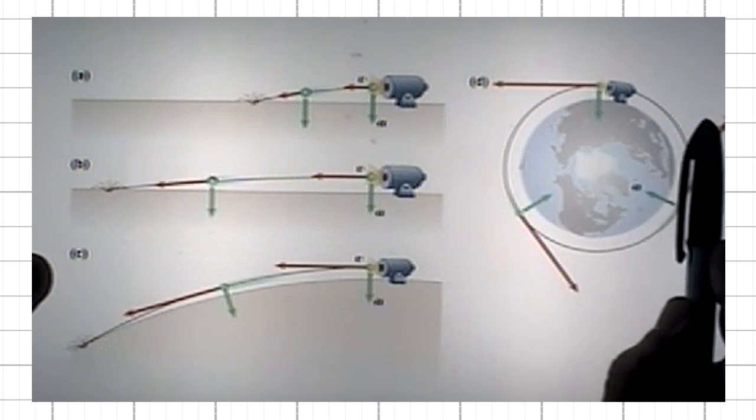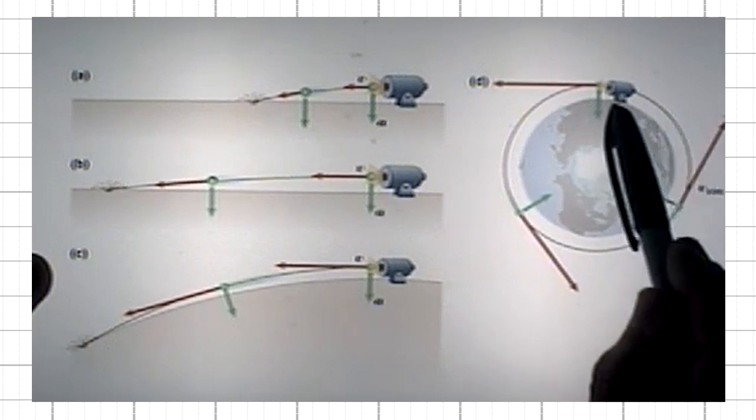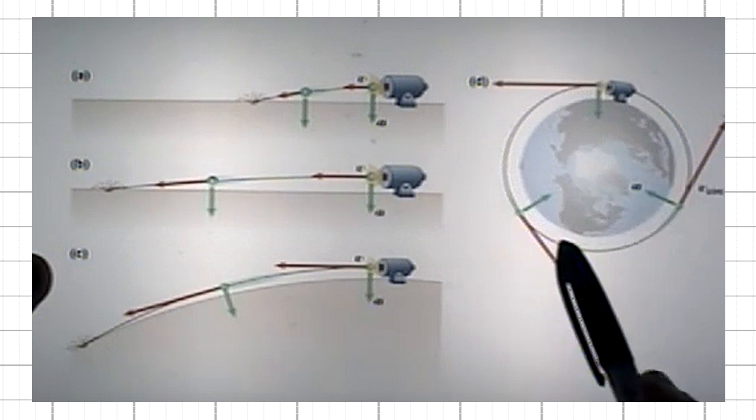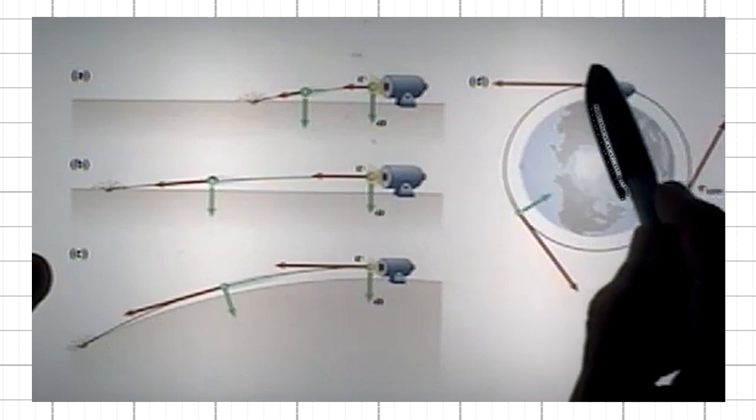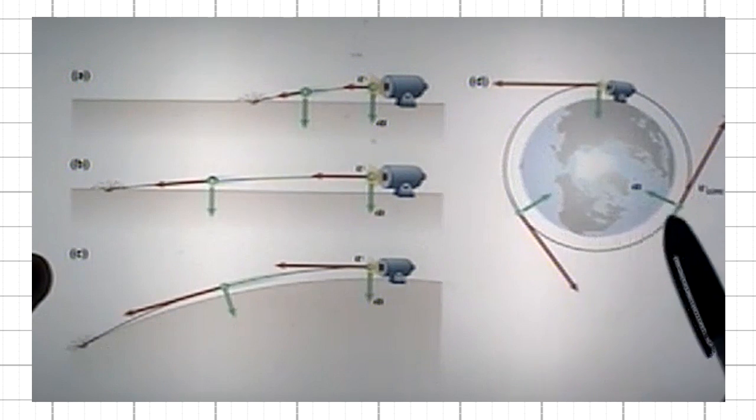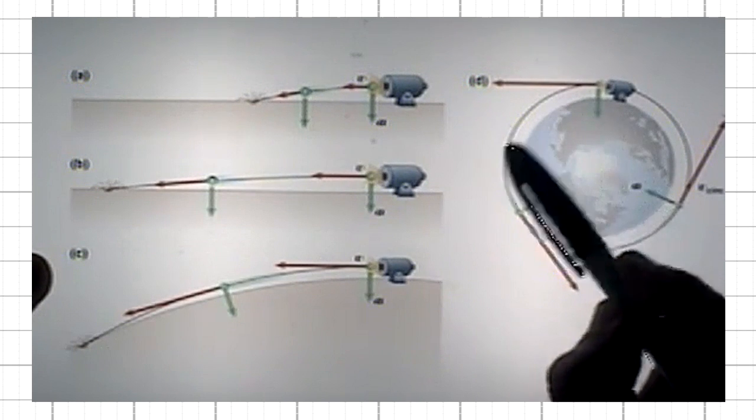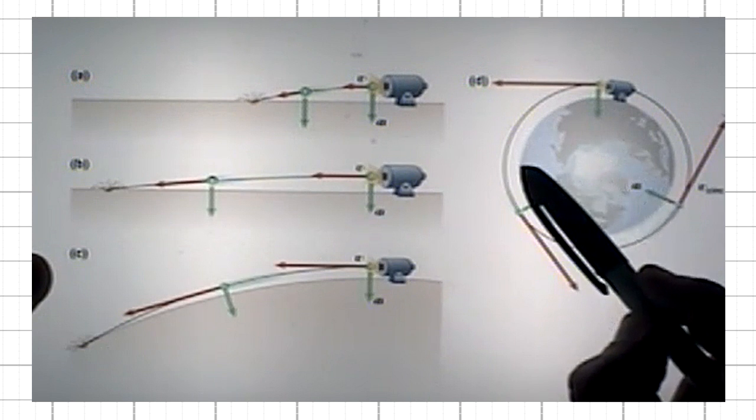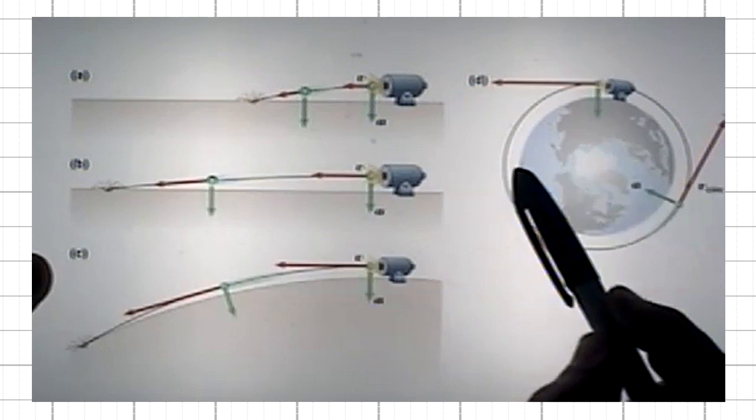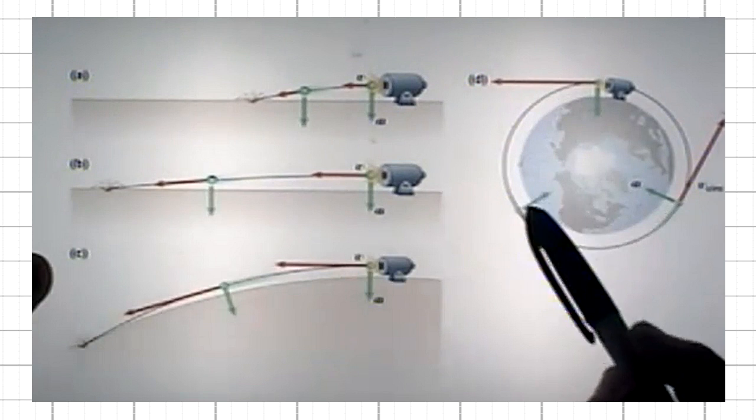If the speed is high enough and just right, the shot would never fall. It would simply be constantly falling, but would never fall down, because by the time it's about to fall, the surface of the Earth has curved, so that its height above the ground locally is always the same.